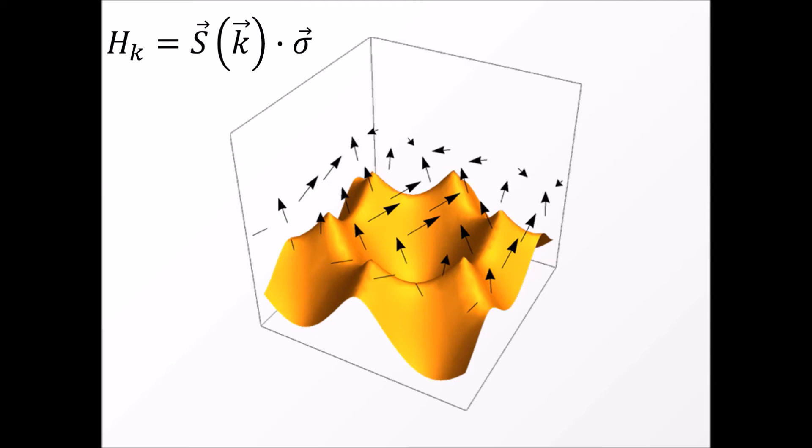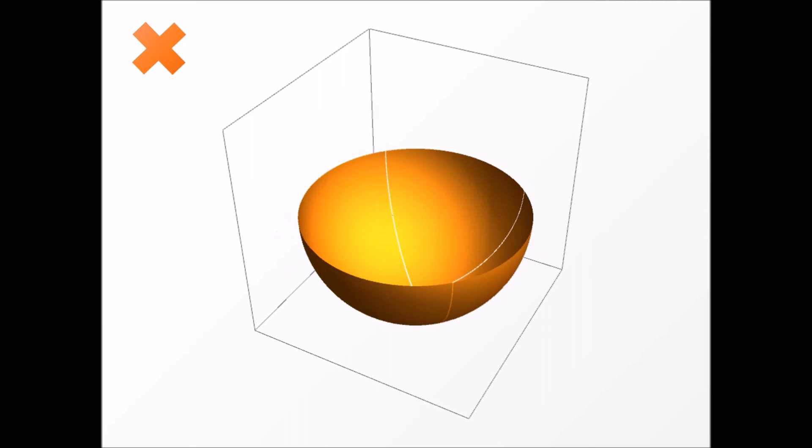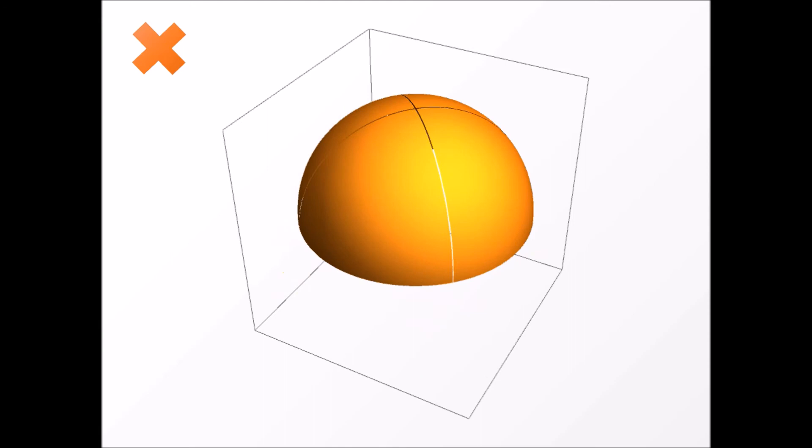When the system is in a non-topological phase, then the vector can cover only the lower half of the Bloch sphere or only the upper half. In both cases, the winding number is zero.